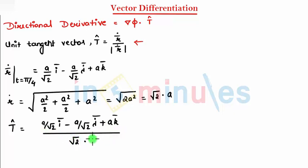This whole gets divided by √2 times a. After taking a common, let's take √2 also common. I can get i bar minus j bar plus √2 k bar, and this gets divided by 2.